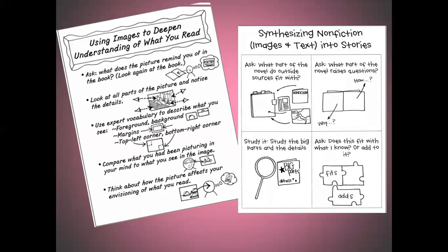The second chart has some questions. Ask: what part of the novel do outside sources fit with? What part of the novel raises questions? Where would I want to do some additional research? Study the big parts and the details. And ask: does this fit with what I know, or does it add to what I want to know?